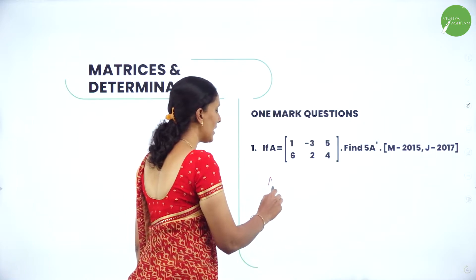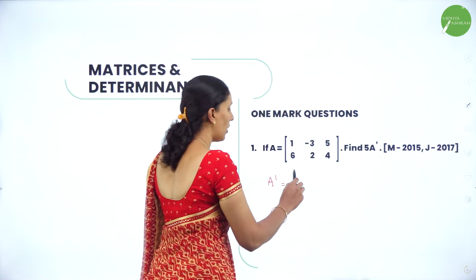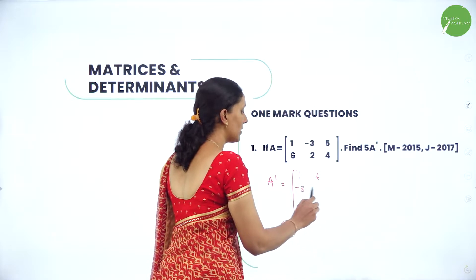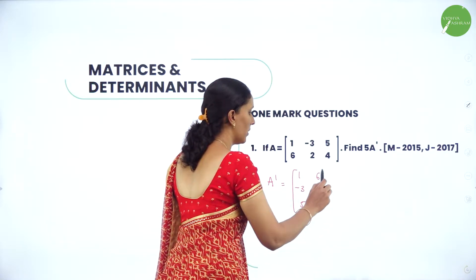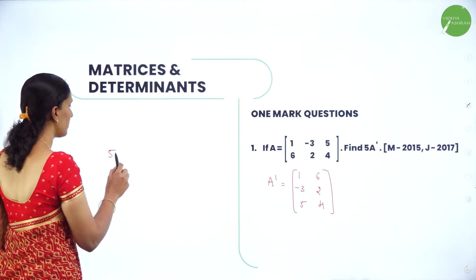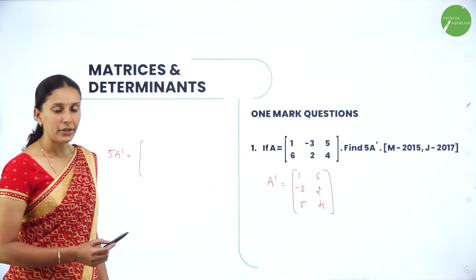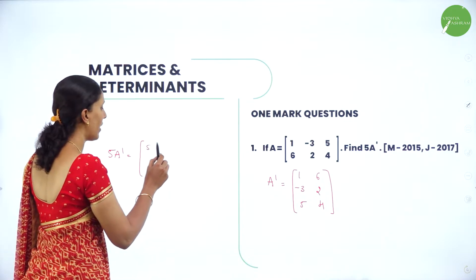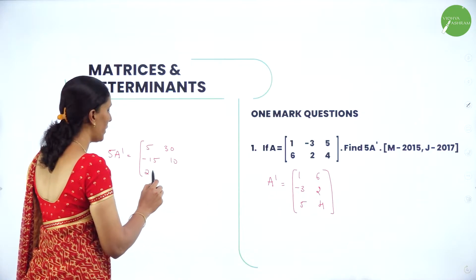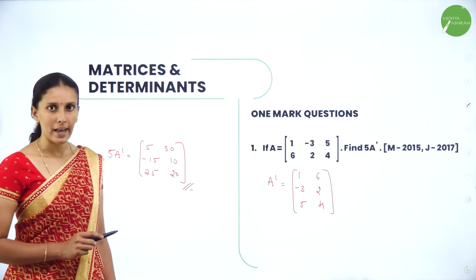A' is the transpose of a matrix — rows into columns or columns into rows. So A' is [1, 6; -3, 2; 5, 4]. Now for 5A', you multiply 5 to every value inside the matrix, giving [5, 30; -15, 10; 25, 20]. So this is 5A'.